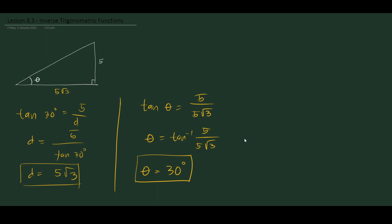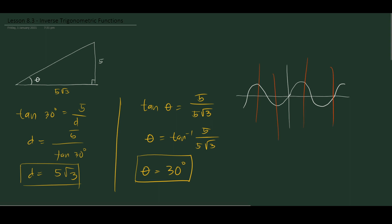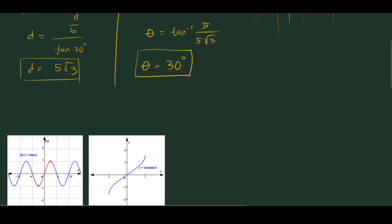You might be wondering why trigonometric functions have inverses. If we look at the graph of sine, it behaves like a wave. From our previous discussions, only one-to-one functions have inverses. One-to-one functions pass both the vertical and horizontal line tests. The sine wave passes the vertical line test, but unfortunately it does not pass the horizontal line test, so it is not one-to-one.